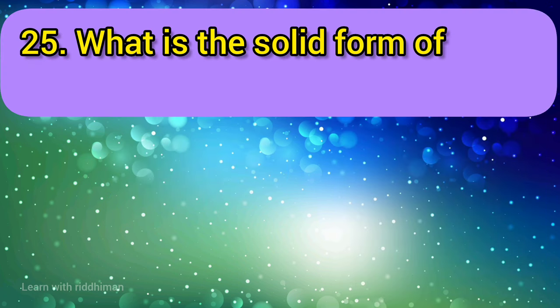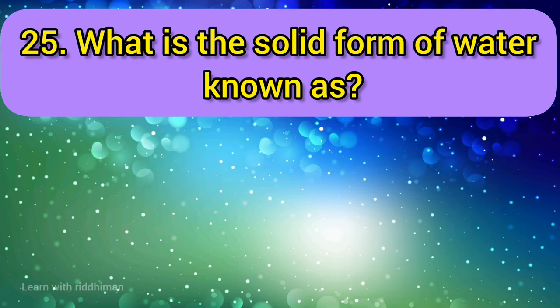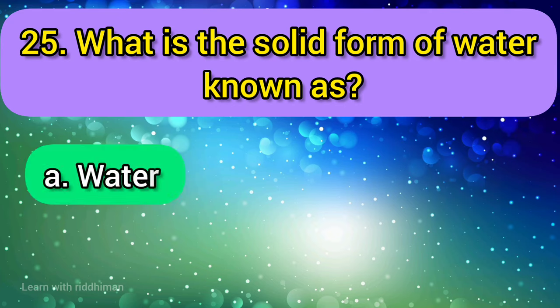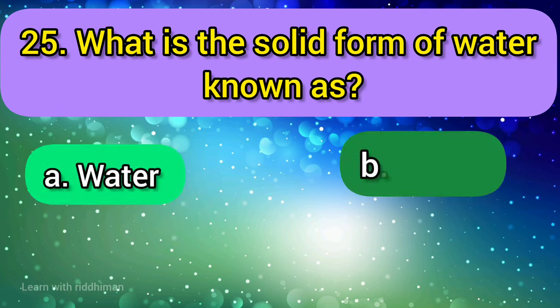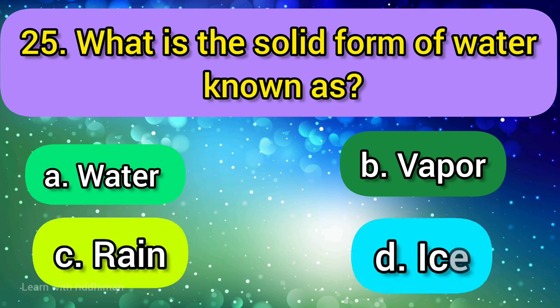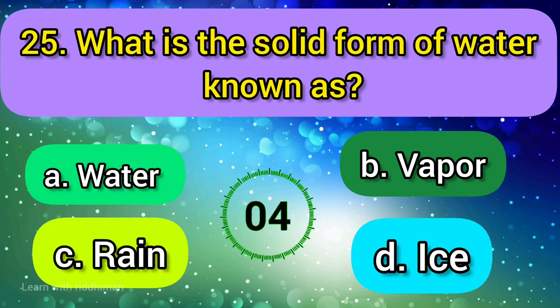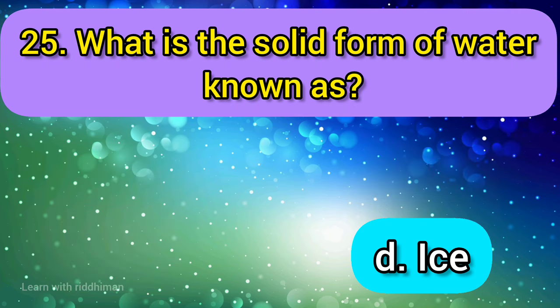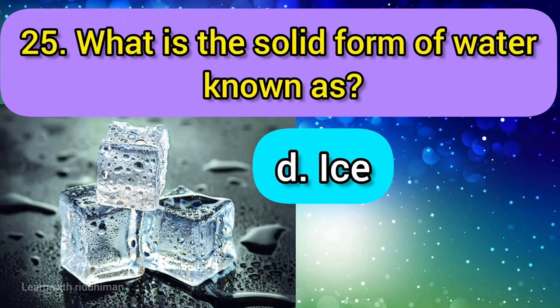What is the solid form of water known as? Water vapor, rain, ice. Answer is ice.